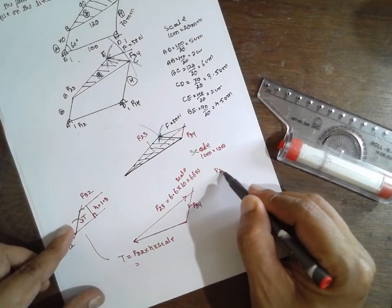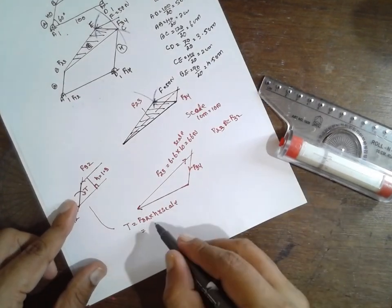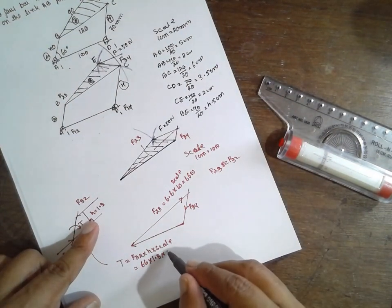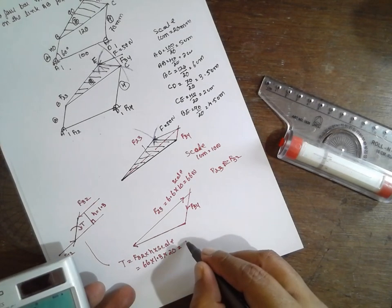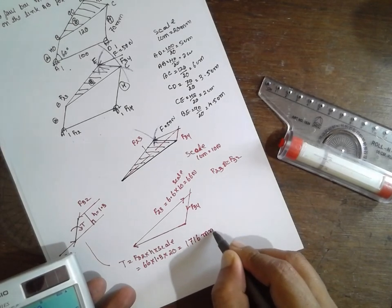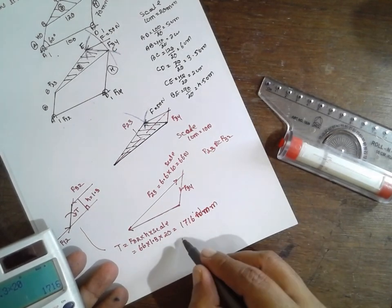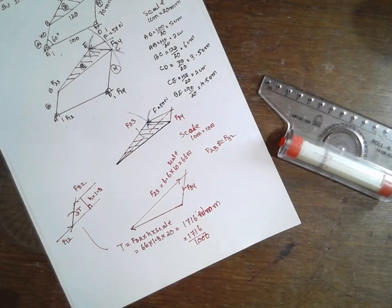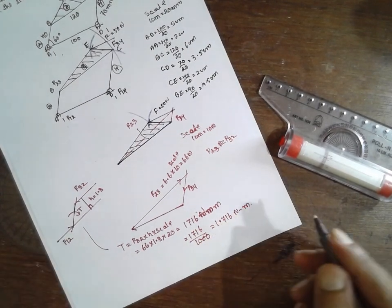F23 is equal to F32, 66, into 1.3, into scale. Scale of this one, what is the scale here? 20. The answer for this one is 66 into 1.3 into 20, 1716 mm. If you want to convert into Newton meter, divide by 1000. 1716 divided by 1000, the answer for this one is 1.716 Newton meter. In this way, you have to solve the problem.